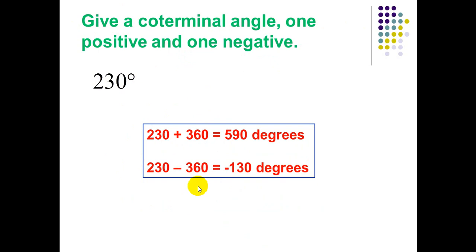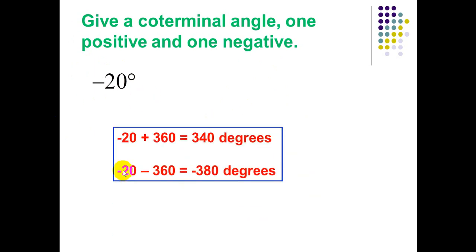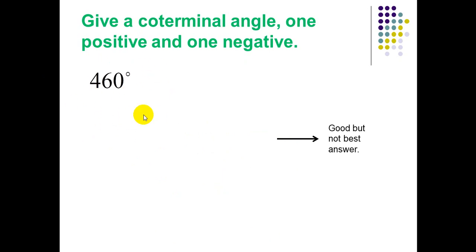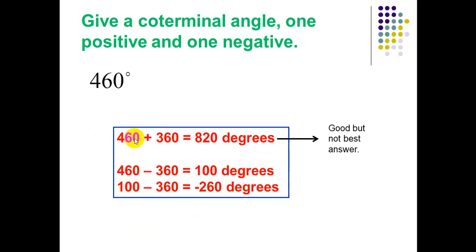Using the relation: the angle plus one revolution or the angle minus one revolution. For negative 20°: negative 20 plus 360 equals 340, and negative 20 minus 360 equals negative 380. So the two coterminal angles are 340° and negative 380°. In the case where we have an angle greater than 360°, to get one positive coterminal angle equivalent to 460°, we make it minus — not plus. If we add 360 we get 820°, which works but is not the simplest.